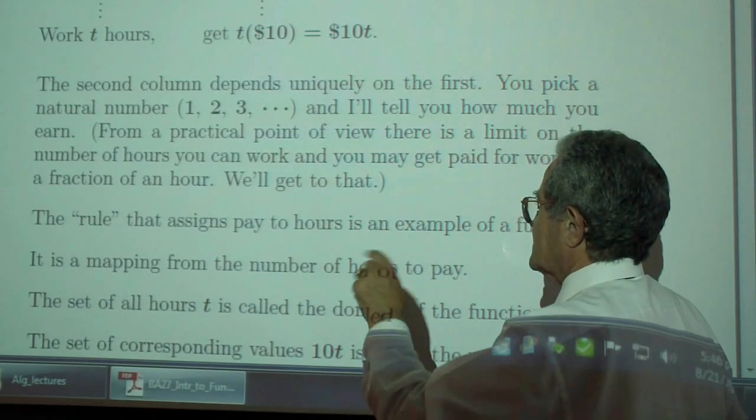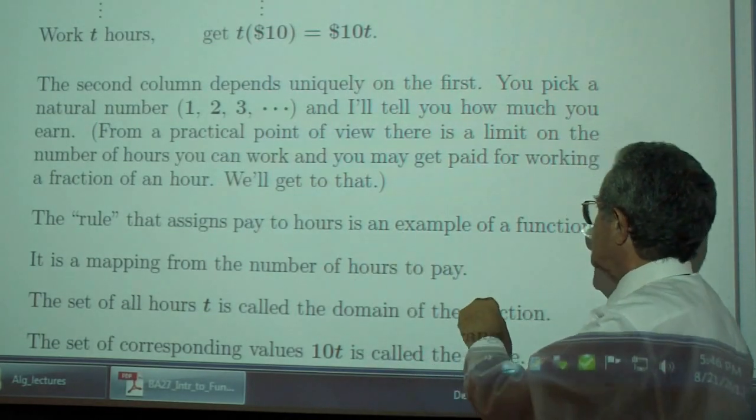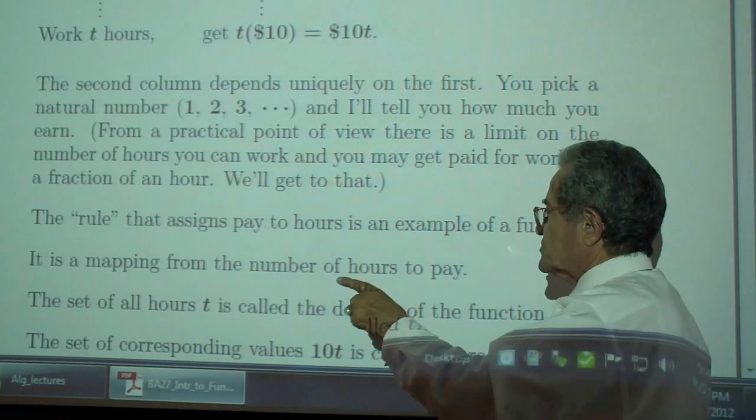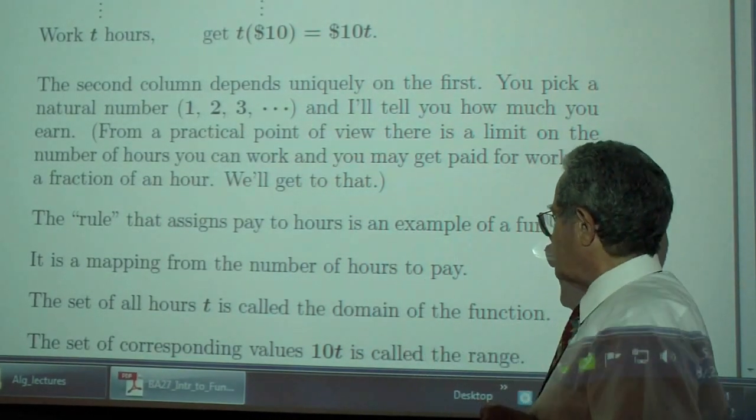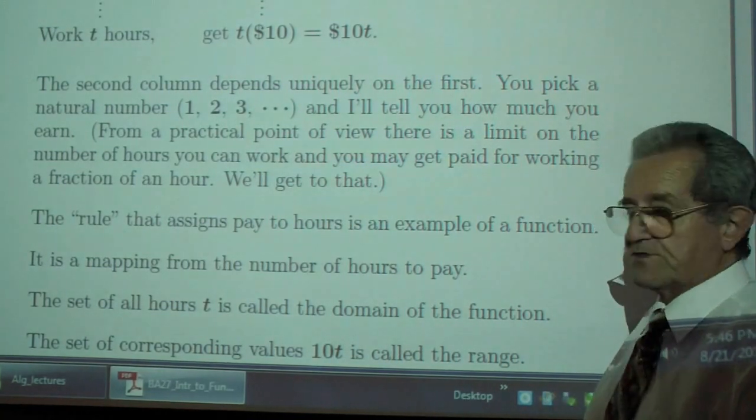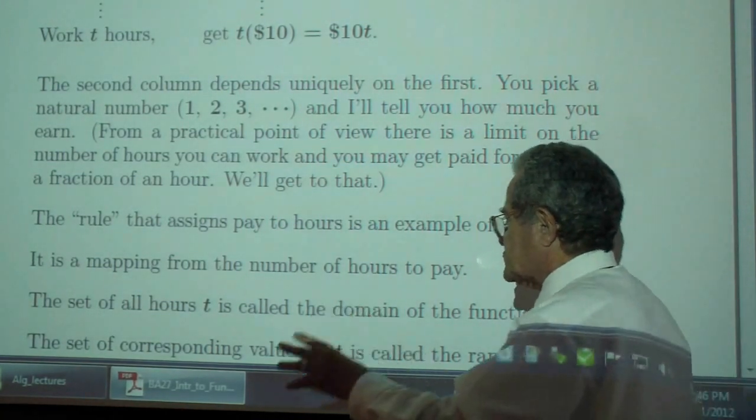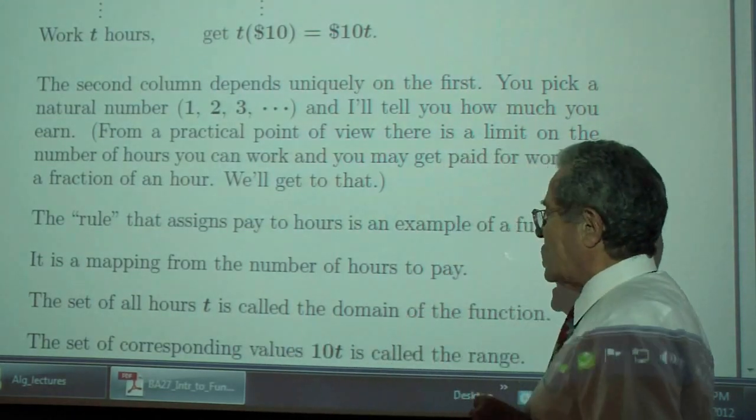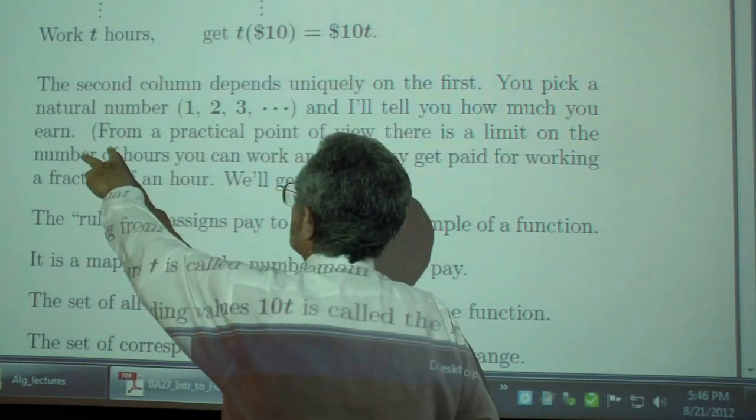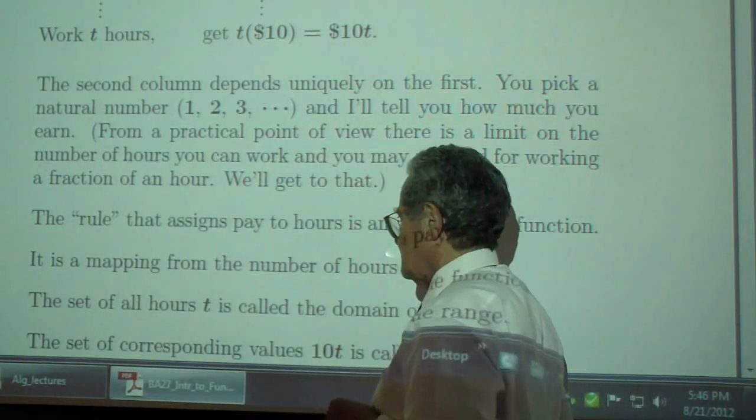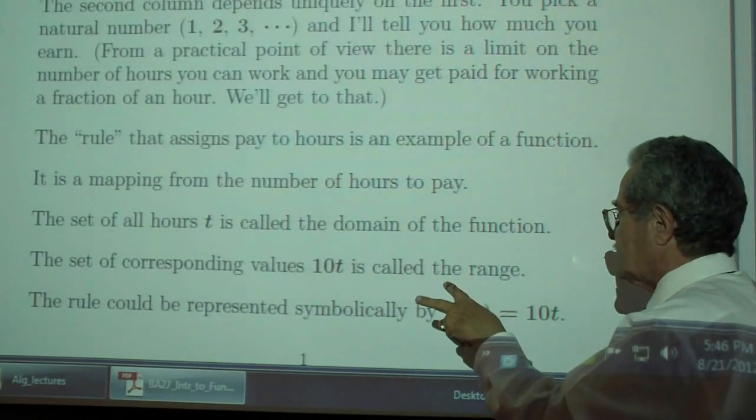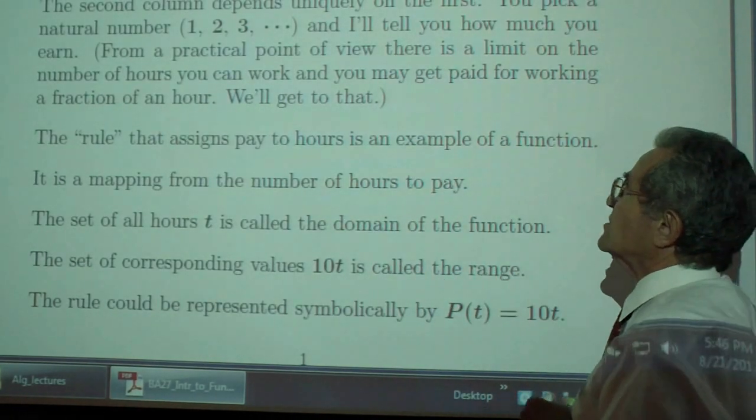The rule that assigns pay to hours is an example of a function. A function is a mapping from number of hours to pay. That's one way of representing functions, mapping. The set of all hours T is called the domain of the function. So the numbers in the first column make up the domain. The set of corresponding values 10T is called the range.